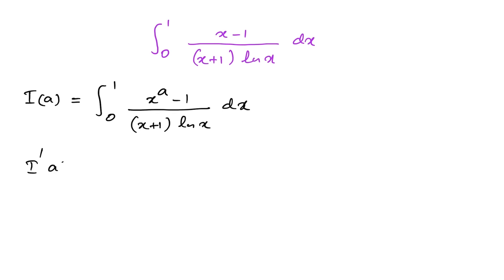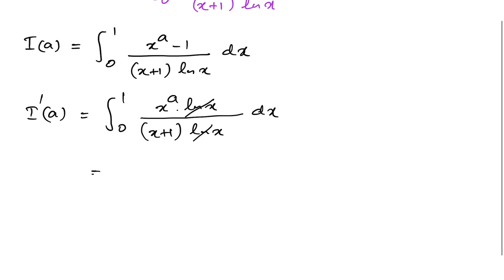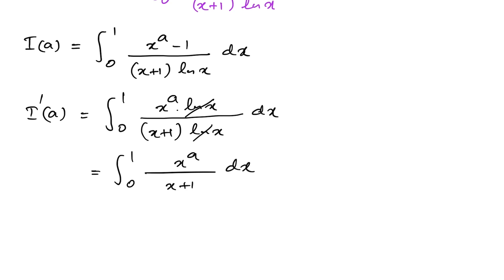So we have I'(a) equal to the integral from 0 to 1. If we differentiate x to the a with respect to a, we get x to the a times natural log of x, over (x plus 1) times natural log of x dx. The natural log of x terms cancel, so we have the integral from 0 to 1 of x to the a over (x plus 1) dx.